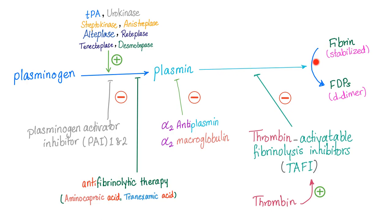Plasminogen converts to plasmin, which dissolves fibrin into fibrin degradation products and stabilized fibrin into D-dimer. We can prevent fibrinolysis at this step using plasminogen activator inhibitors, which are already in your body, or we can administer drugs from outside — anti-fibrinolytic therapy, aminocaproic acid or tranexamic acid — to prevent the conversion of plasminogen into plasmin and prevent the dissolution of fibrin.